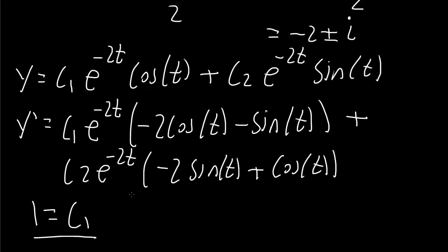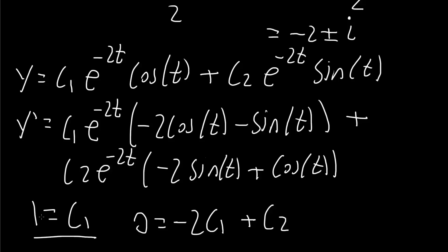Next we use y prime equals 0 and plug in t equals 0. The exponential gives 1, cosine 0 gives 1, sine 0 gives 0. So we get negative 2c1 plus c2 equals 0. Since c1 equals 1, that gives negative 2 plus c2 equals 0, so c2 equals 2.